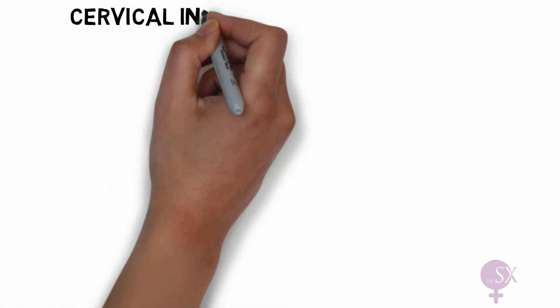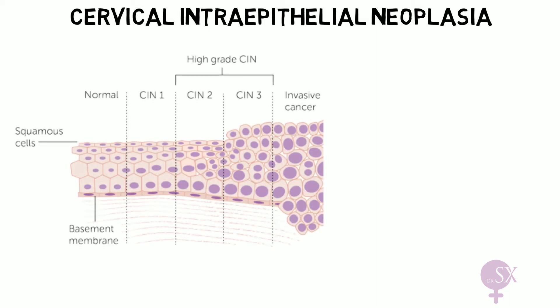Before we move on, a quick note about cervical intraepithelial neoplasia (CIN), which is the pre-malignant lesion leading to cervical cancer. CIN is a histological diagnosis obtained after colposcopy and cervical biopsy. As you can see in this image, we have normal squamous cells throughout the epithelium; abnormal cells in the lower one-third makes this CIN 1; abnormal cells in the lower two-thirds makes this CIN 2.